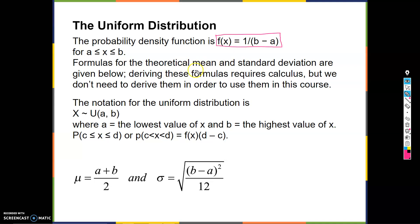Formulas for the theoretical mean and standard deviation are given below. Deriving these formulas requires calculus, but we don't need to derive them in this course. The notation for the uniform distribution is X tilde U(a, b), where a is the left endpoint — the lowest value of x — and b is the right endpoint — the highest value of x. Everything I'm underlining or boxing are really important things you're going to need later.